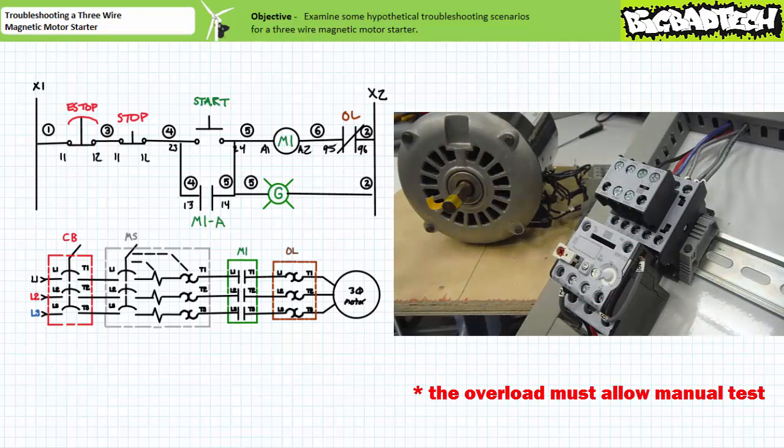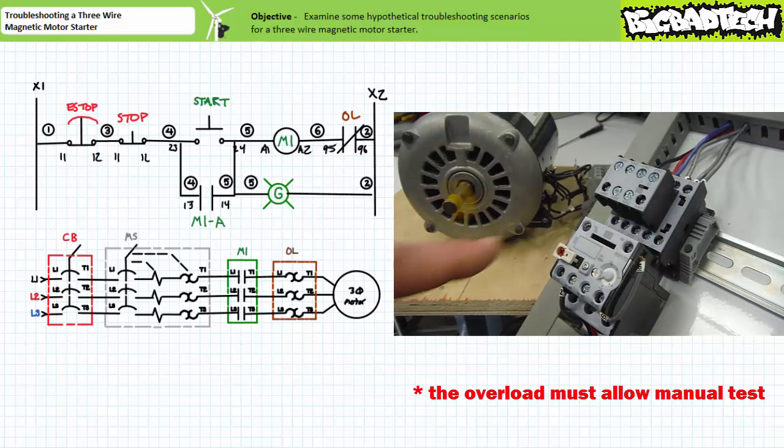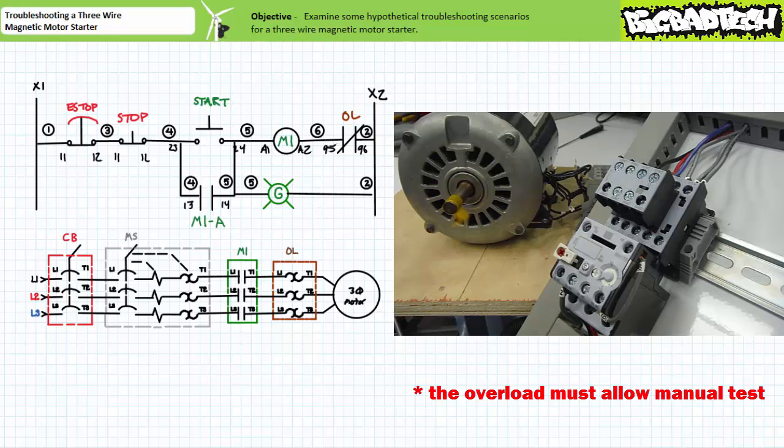The easy answer is to quite simply de-energize the contactor coil. The most immediately accessible means of doing so is to manually trigger the overload test button on the front of the overload relay. When the manually triggered contactor coil is de-energized, the holding circuit is broken and the motor free spins to a halt.